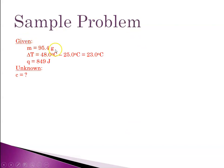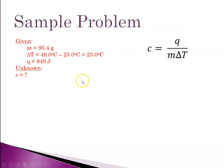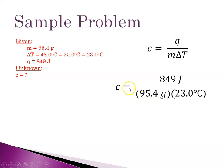Let's identify the variables. The givens are: m = 95.4 grams; ΔT = T2 − T1 = 48.0 − 25.0 = 23.0°C; and q = 849 joules (three sig figs each). The unknown is c. Our parent equation rearranged gives c = q / (mΔT). Always identify given variables, the unknown, and the parent equation before plugging in numbers.